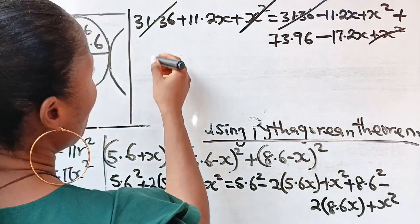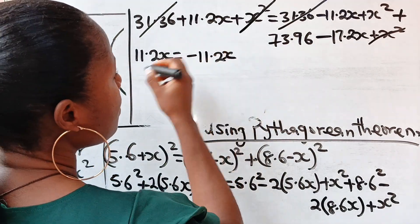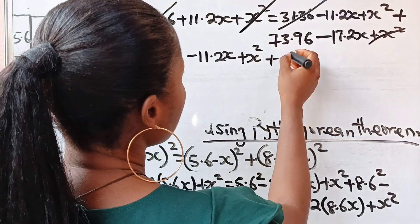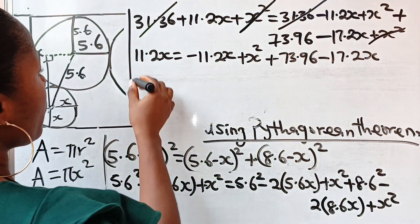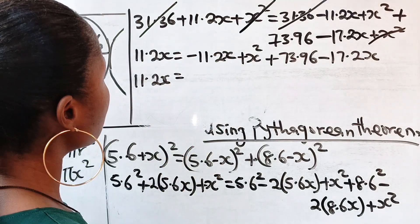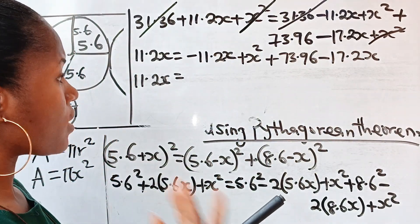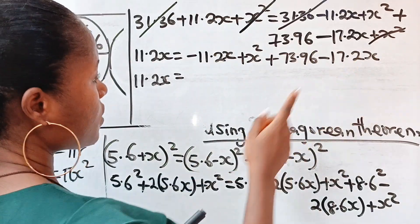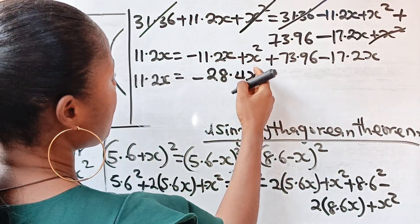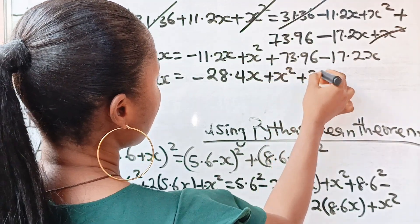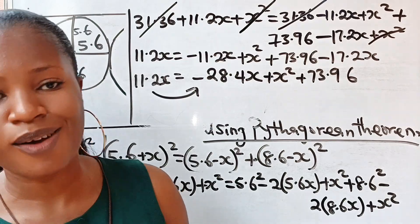We have 11.2x equals −11.2x plus 73.96 minus 17.2x. So 11.2x equals −28.4x plus 73.96. Let us transfer this to this side so that we have zero, since we are about to form a quadratic equation.